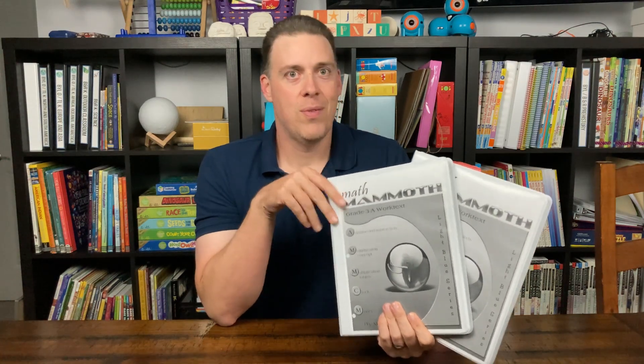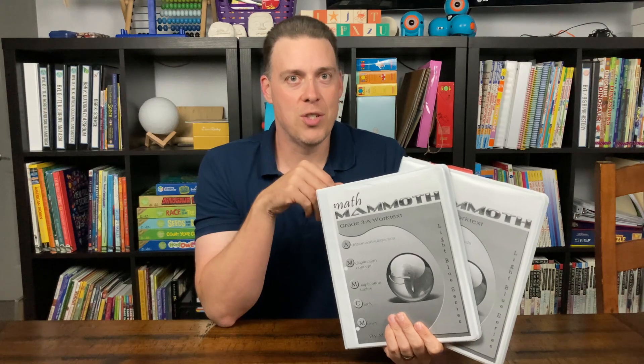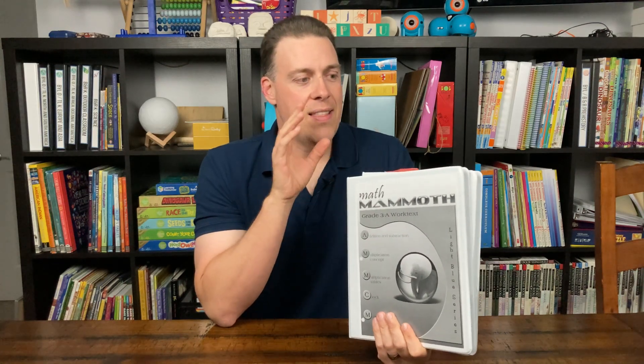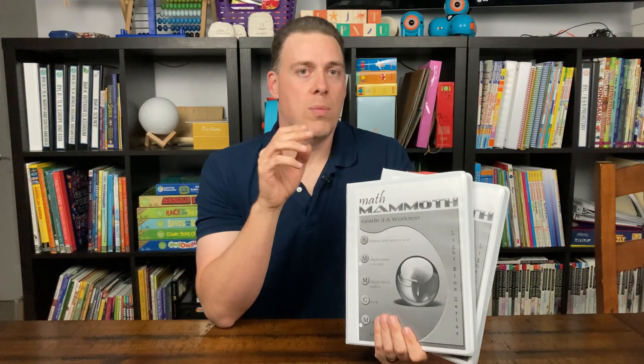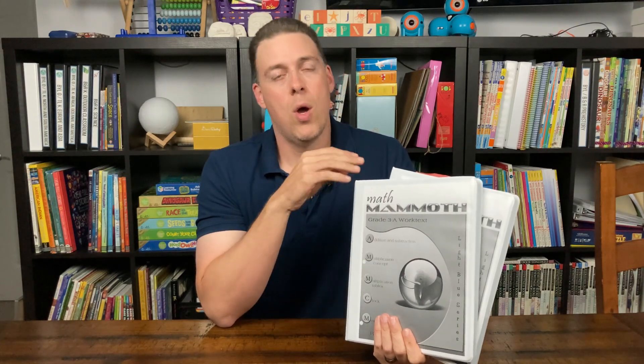As you can see here, they're in binders. I like to use the digital version of this curriculum, which is available at the Math Mammoth website for about $50 to $60. This is a great curriculum that you can do. It's a workbook based curriculum, typically about four workbooks, two main workbooks that you'll be doing, as well as the answer keys and supplemental tests.